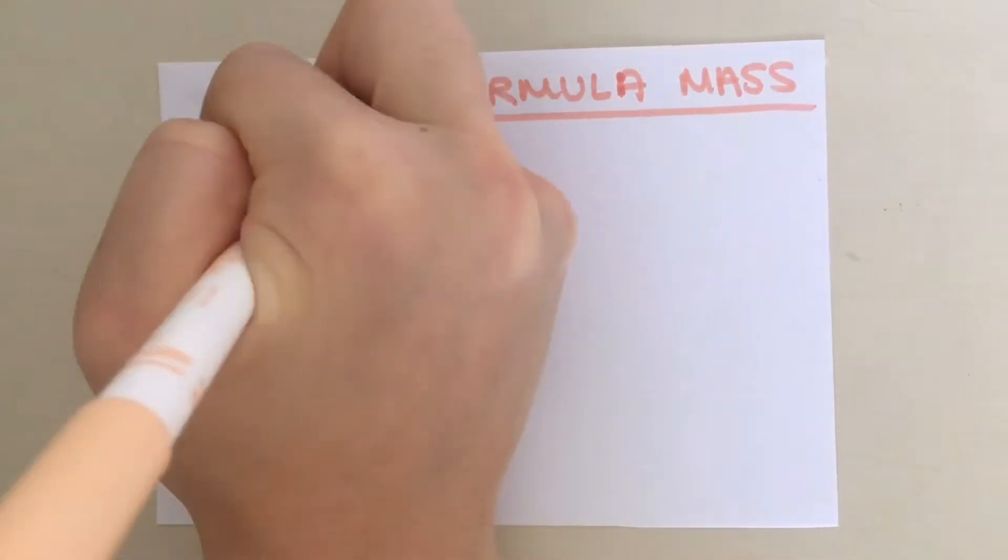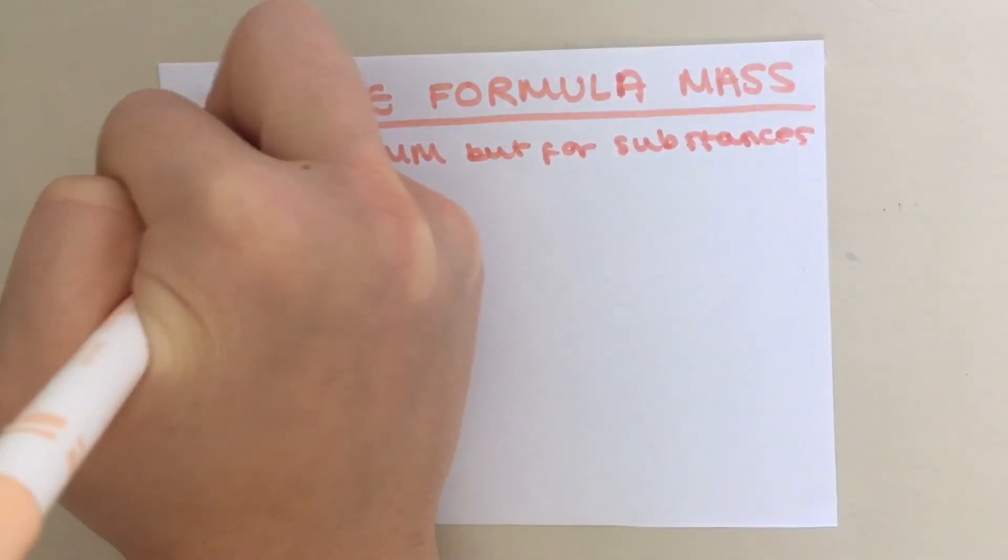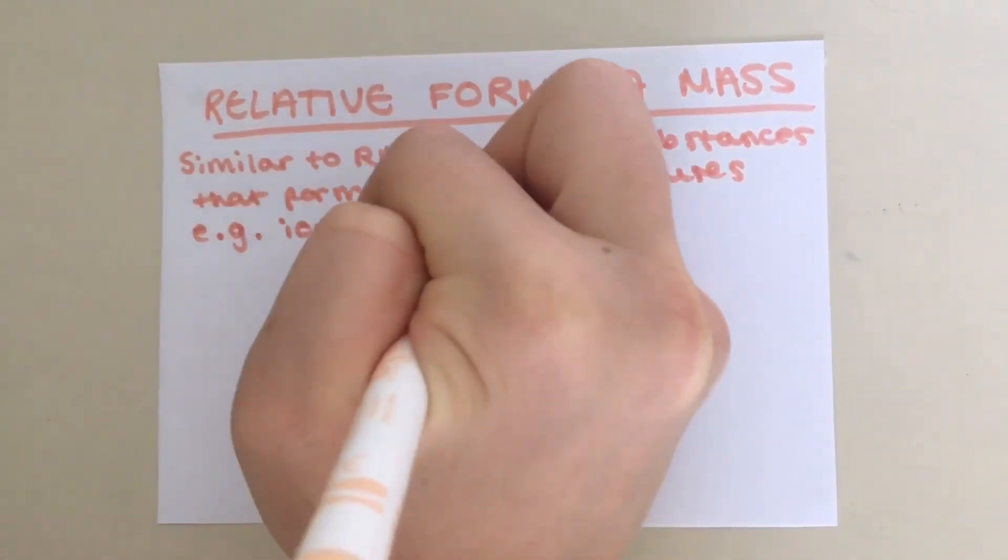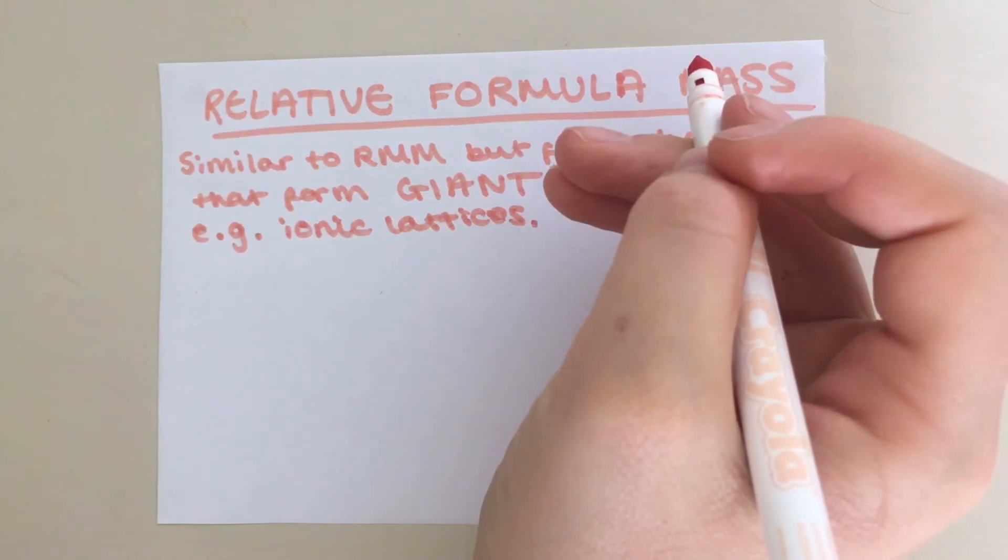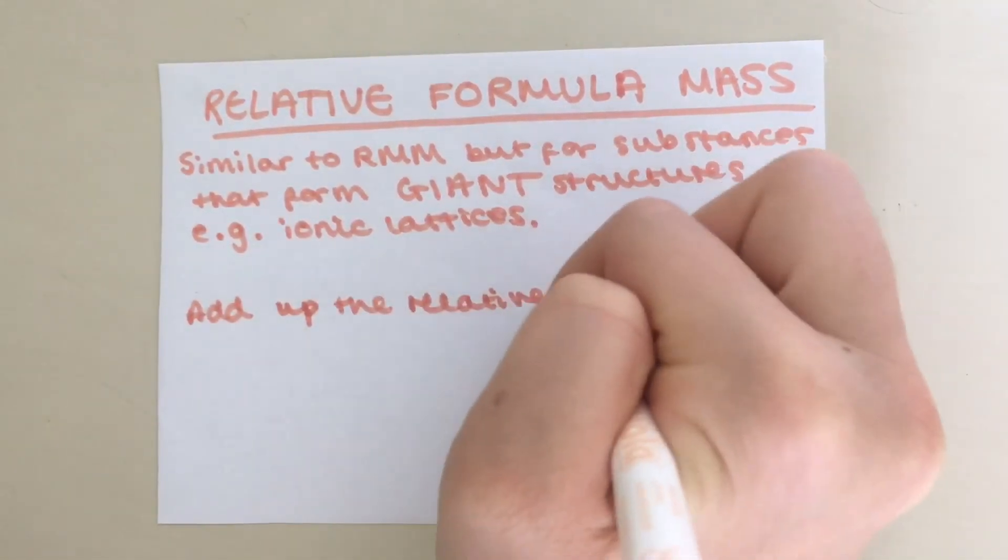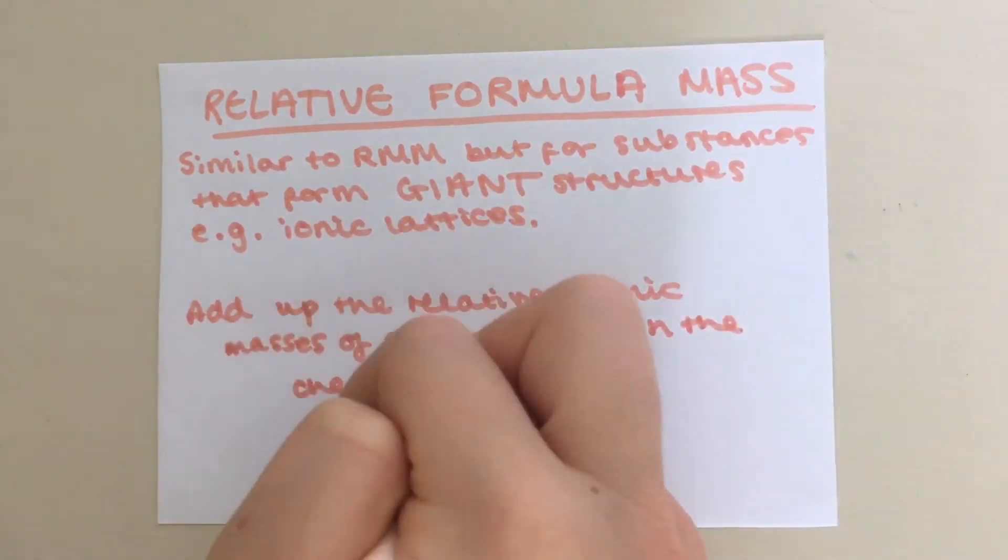Relative formula mass is similar to relative molecular mass. However, it is for substances which form giant structures, for example, ionic solids, where the cations and anions arrangement continues indefinitely. You calculate RFM in the same way as RMM by adding the relative atomic masses of all the atoms in the chemical formula.